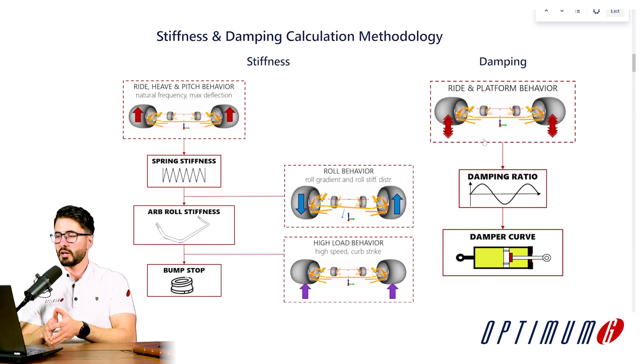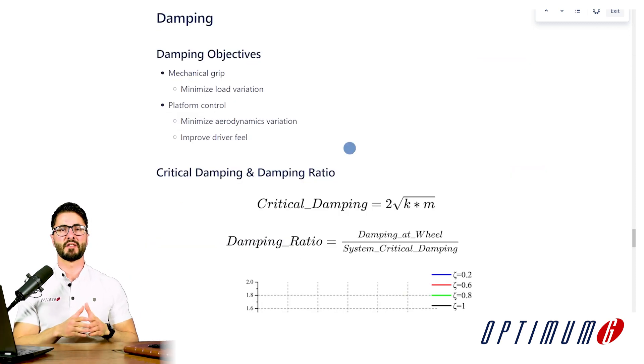From that decision we can determine the damping ratio that we would like to run in our system and from that we can calculate the damper curves. So what are the objectives that we have when defining damping?